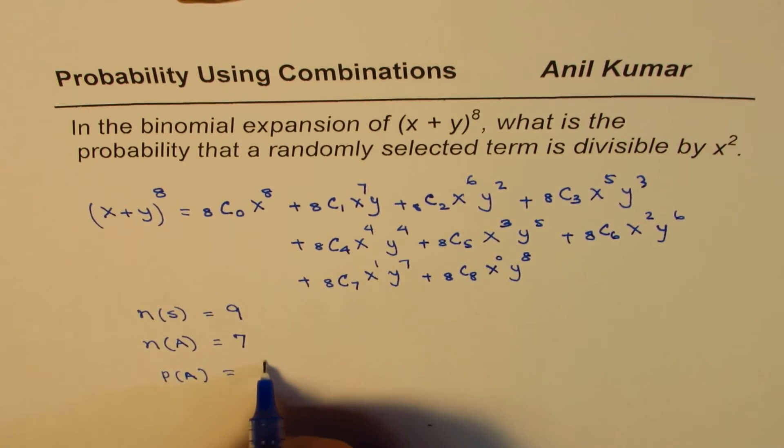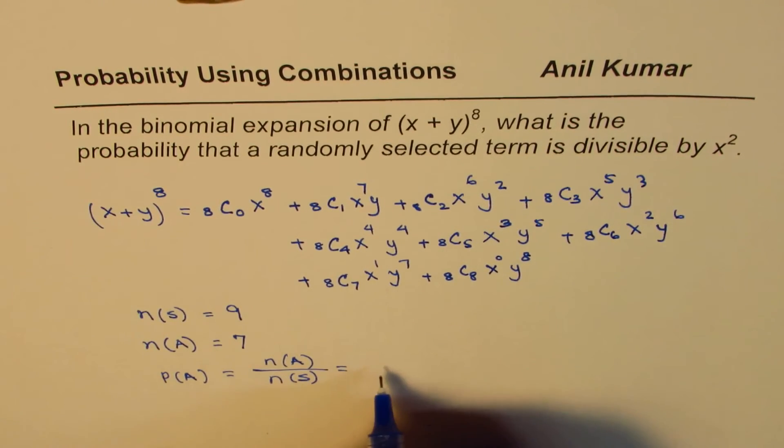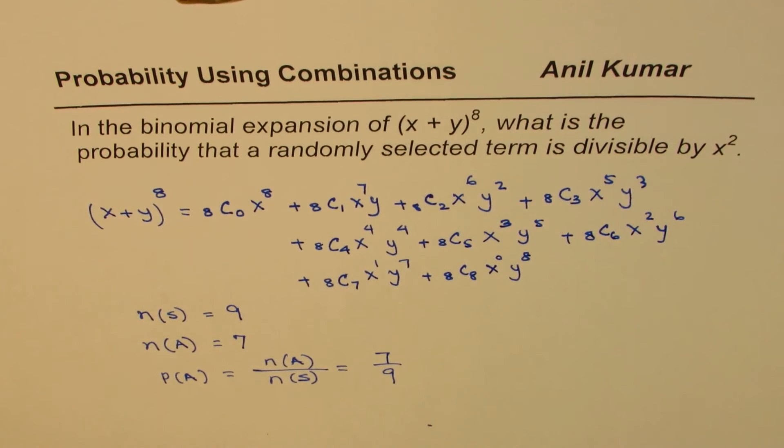And therefore the probability of this event is equals to n of A over n of sample space, so it is 7 over 9. That is the answer for the given question. I hope that is absolutely clear, thank you and all the best.